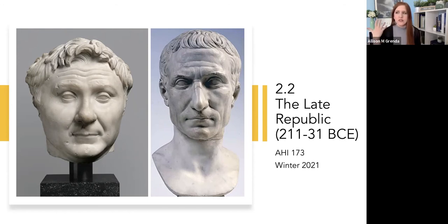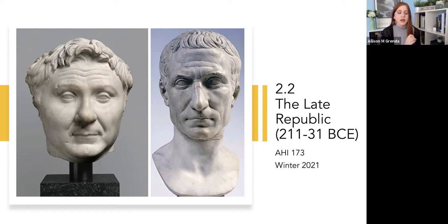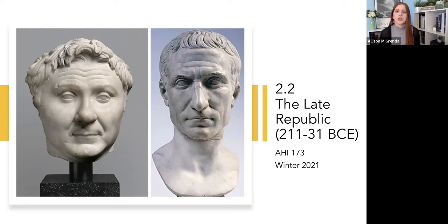I want to say outright what these architectural developments are, because you're going to hear me talking about them throughout the lecture over and over. The two main architectural developments to take away are: first, Roman temples, which previously looked much more Etruscan, are going to start looking more Greek. The other thing is that we're going to see the rise of the Ionic and Corinthian orders. Previously we had seen the Doric order — like in Paestum — but now we're going to see a lot more Ionic and Corinthian. Corinthian in particular will become a hallmark of Roman architecture.